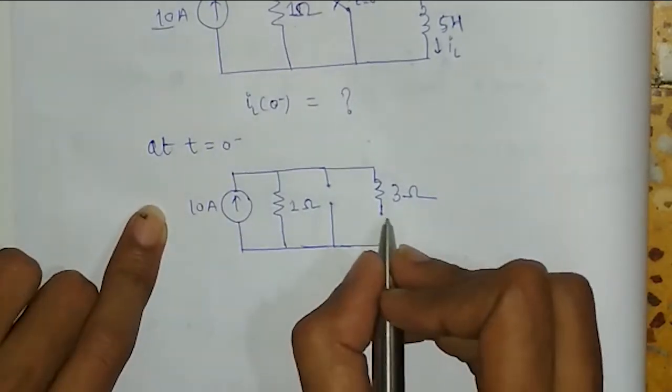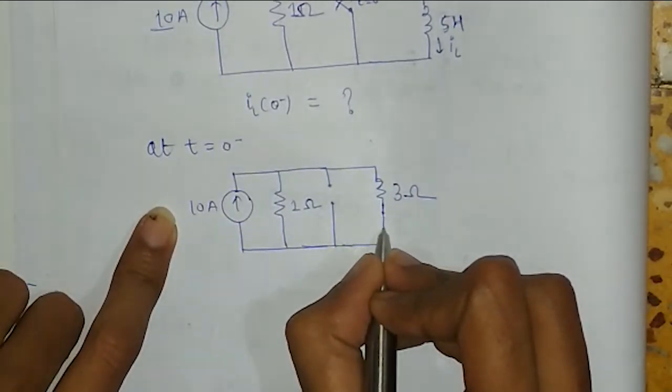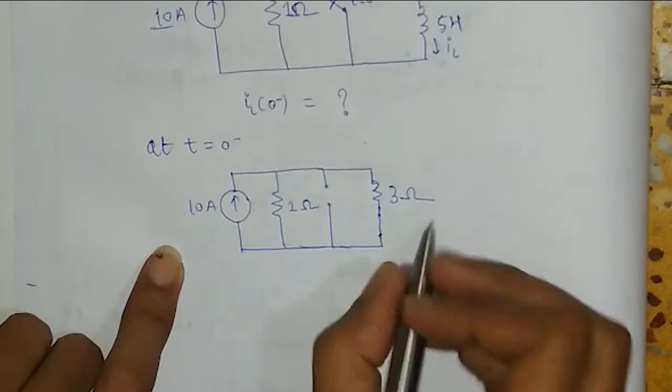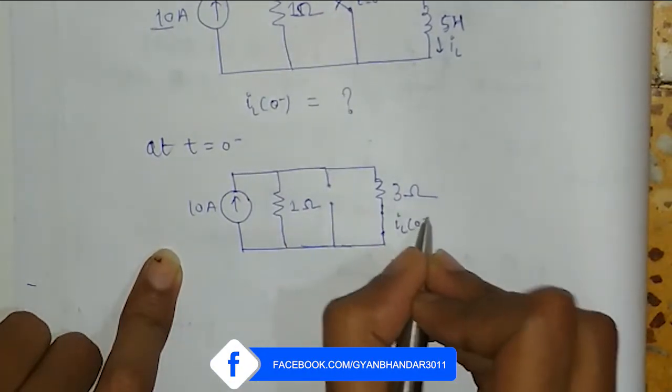so it will be iL(0-), here the current will flow iL(0-).